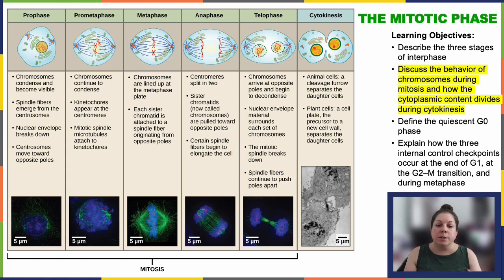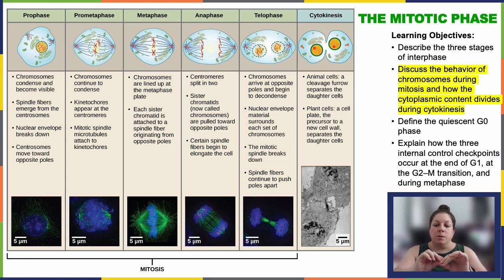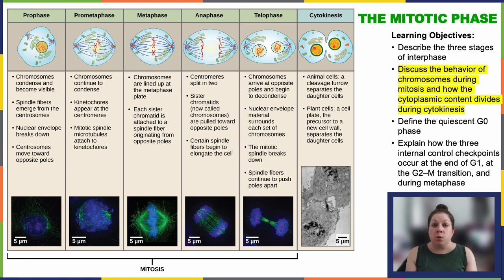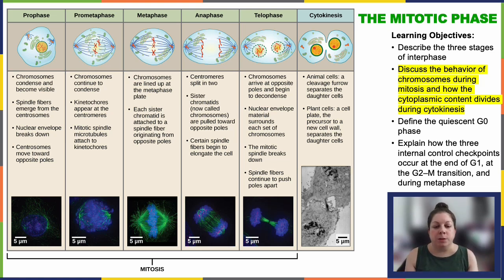In anaphase, all the chromosomes at the metaphase plate are nicely lined up with tight sister chromatid connections, and then we start seeing them pull apart. It happens quickly — that connection breaks and the chromatids start pulling toward opposite centrosomes. The cell gets kind of long and football-shaped as this happens.